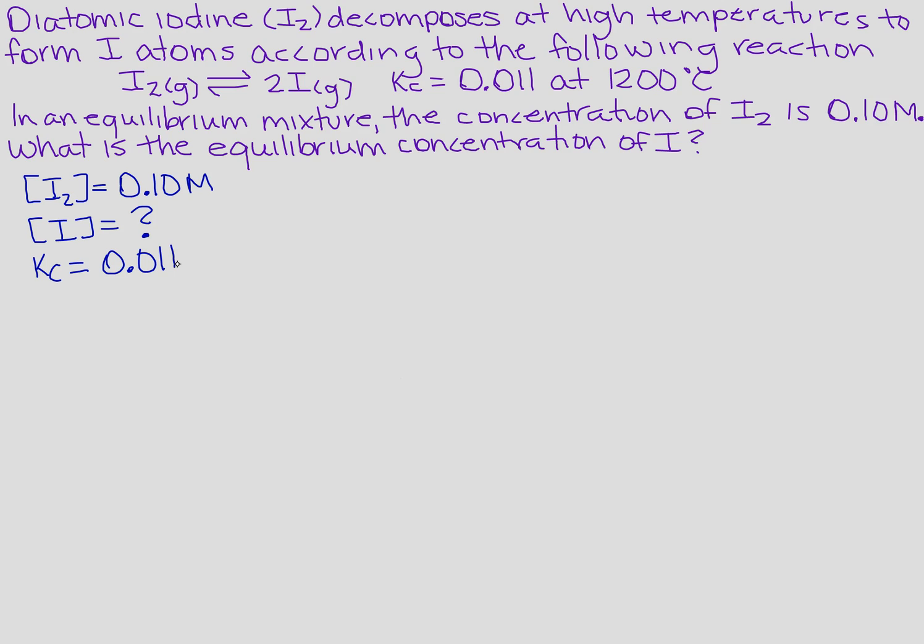Well, it looks like I'm going to have to write an equilibrium constant equation. So how do I find Kc? Well, Kc is the products, which is the I. There's two of them, so it's going to be squared over the concentration of I₂.